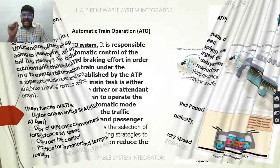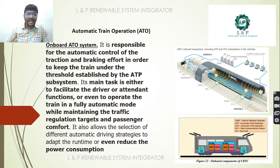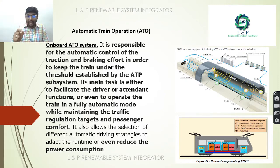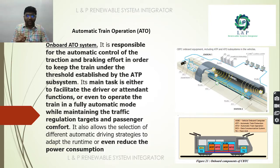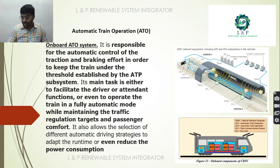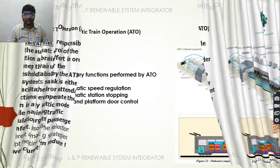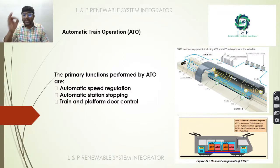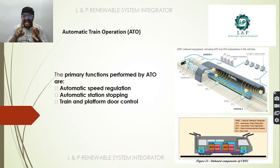The on-board ATO (automatic train operation) is responsible for automatic control of traction and braking effort to keep the train within the thresholds established by the ATP system. Its main task is to facilitate fully automated train operation while maintaining traffic regulation targets and passenger comfort. It also plays an important role in reducing power consumption. Its primary functions are automating speed, station stopping, and train and platform door control.